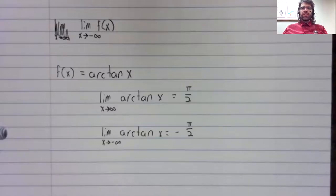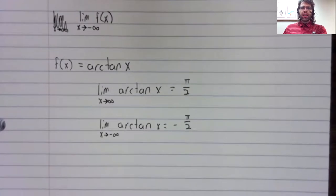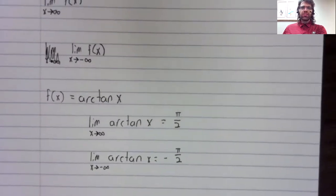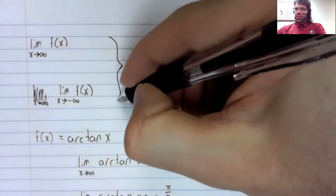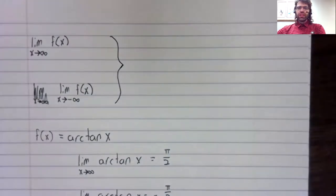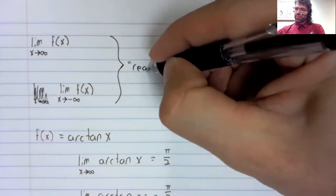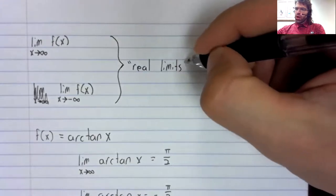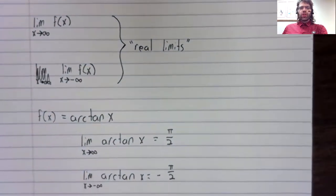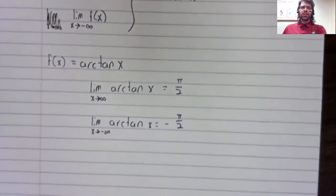Unlike infinite limits, which are not limits at all but rather special ways that limits might not exist, the limit as x approaches infinity or as x approaches negative infinity—these are real limits. And all of the limit laws we know apply to them.